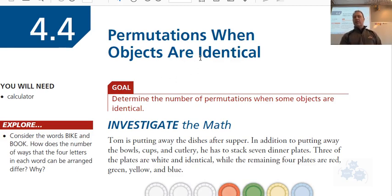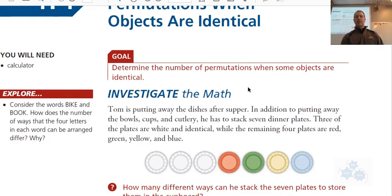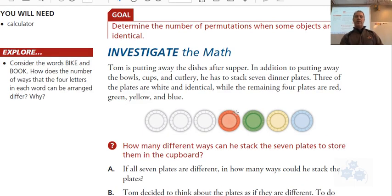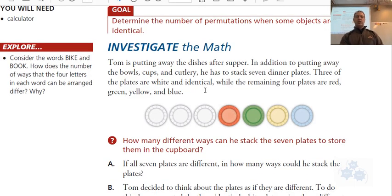But this is a bit of a twist here. So what happens when we have some of the objects are identical? How does the arrangement of those things change when some of them are identical? You can see in this investigate here, which we won't follow all the way through, but you can see here's a situation where we have seven plates and three of them are identical white plates.